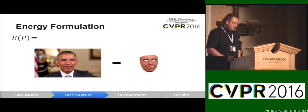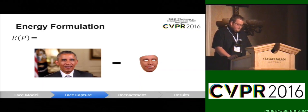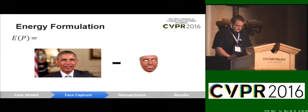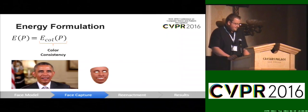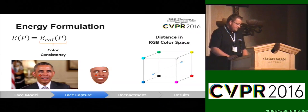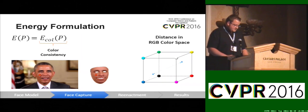Using this model we apply an analysis-through-synthesis approach. We have to adjust the parameter vector p in a way that we can reproduce the input image. We define an energy E(p) that measures the difference between the input image and the synthesized image. It consists of a color consistency term that measures the pixelwise difference between the input image and the synthesized image in RGB color space using an L2.1 norm.